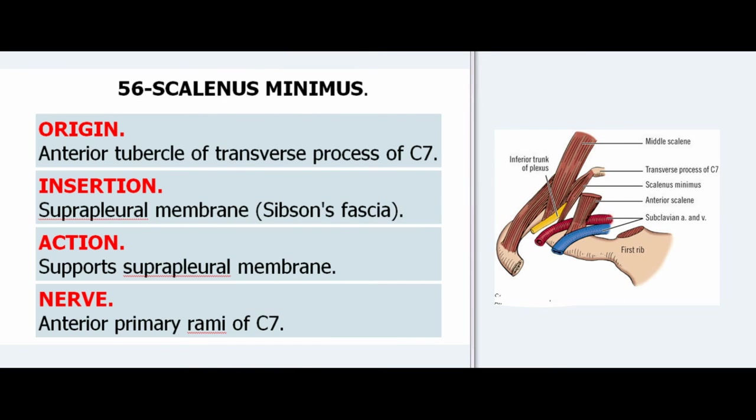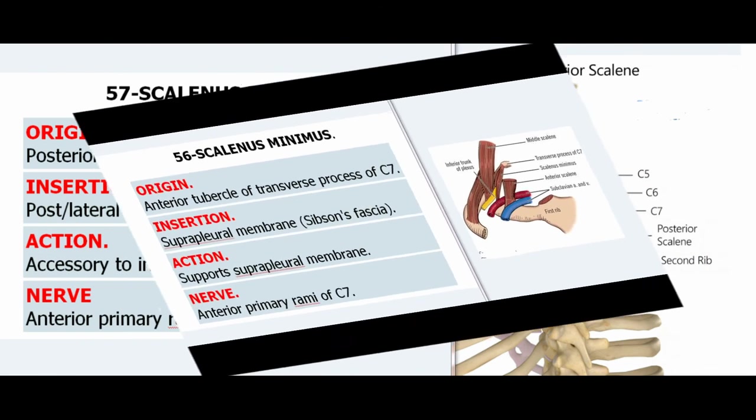56. Scalenus Minimus. Origin: Anterior tubercle of transverse process of C7. Insertion: Suprapleural membrane (Sibson's fascia). Action: Supports suprapleural membrane. Nerve: Anterior primary rami of C7.